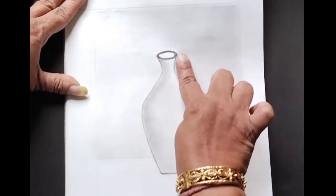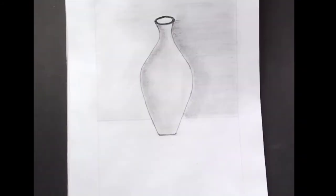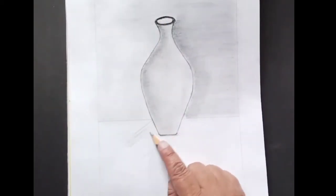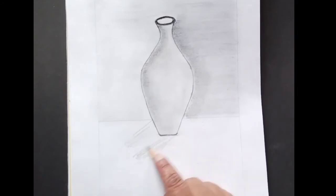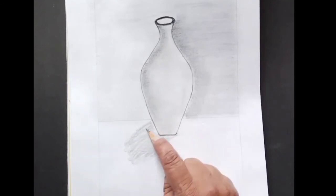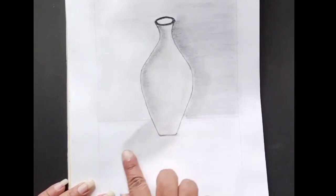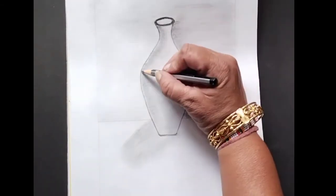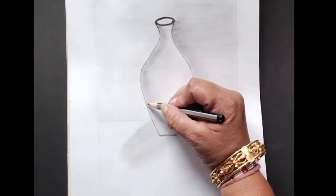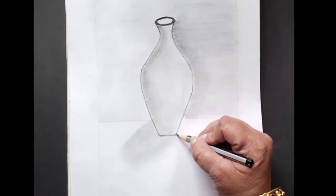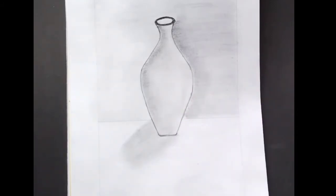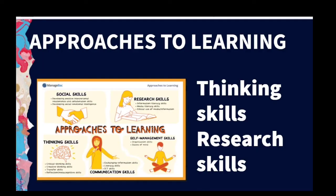This is my understanding of still life drawing — I have drawn a jar. You can draw any object that gives a still life look; it can be a mug, a cup, a glass, a water bottle, anything. Finally, we will add the shadow at the bottom part of the jar, and our still life drawing is complete.